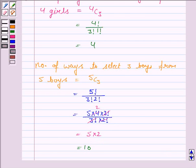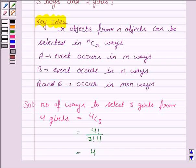So, this is the theory of combination that r objects from n objects can be selected in nCr ways.